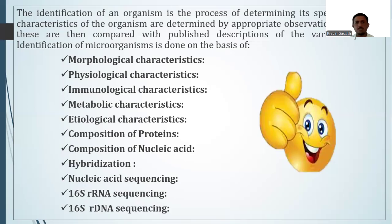Various characteristics of an organism are determined by appropriate observation and tests, and these are then compared with the published descriptions of various species. For identification of microorganisms, we can carry out different methods or tests, or analyze different characteristics in the laboratory, so that we can reach a final conclusion that our organism belongs to a particular genus or species. We will now discuss the characteristics used in the classification system one by one.